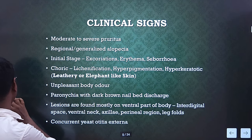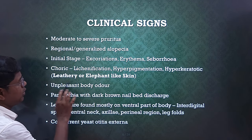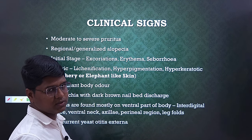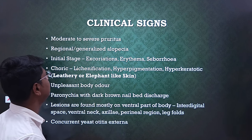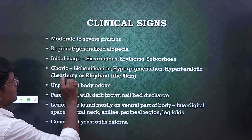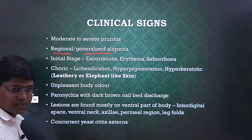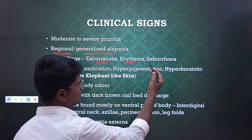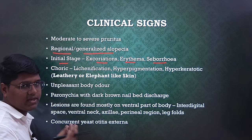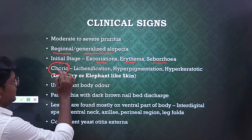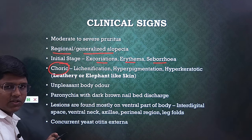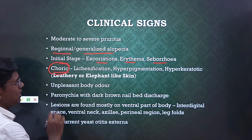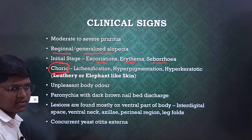The clinical signs: moderate to severe pruritus. We will see the difference between Malassezia disease and dermatophytosis — in dermatophytosis, pruritus is minimal, but here you will find moderate to severe pruritus. You may find regional or generalized alopecia. In the initial stage, you will find excoriation, erythema, reddening of the skin, and seborrhea — oily deposition. In chronic cases, fungal lesions are usually not detected in the early stage.